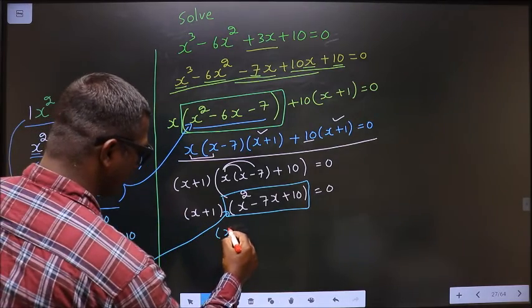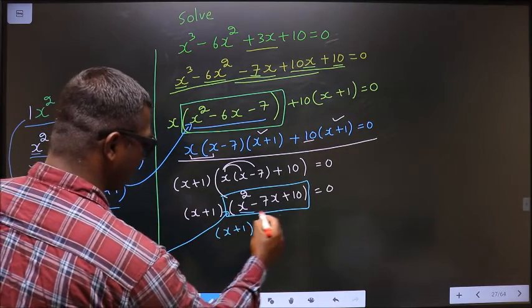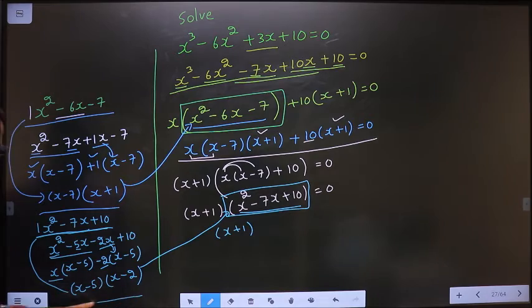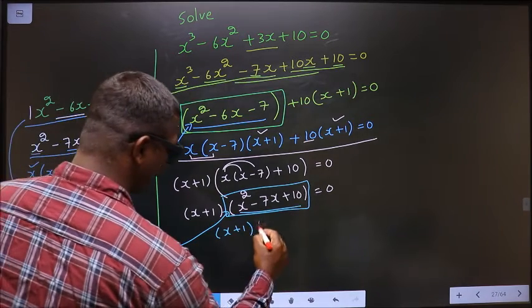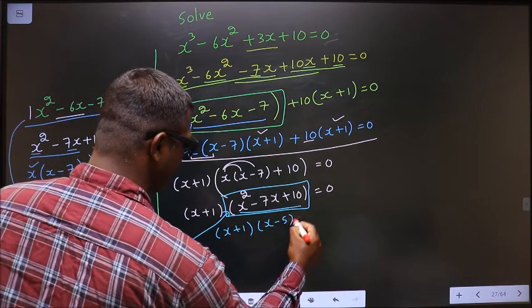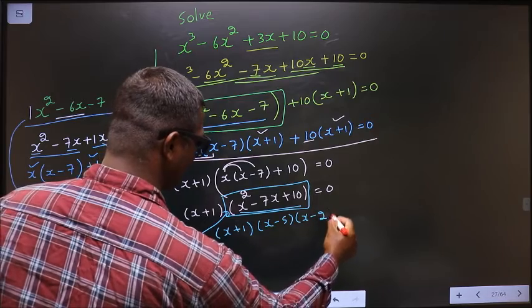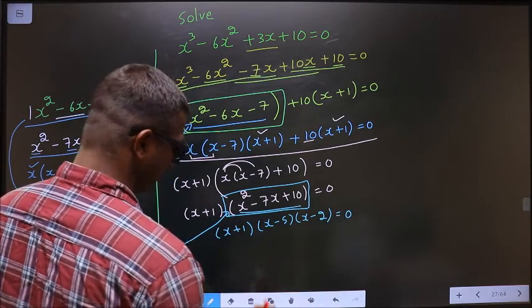So x plus 1, in place of this quadratic write x minus 5 times x minus 2, equal to 0.